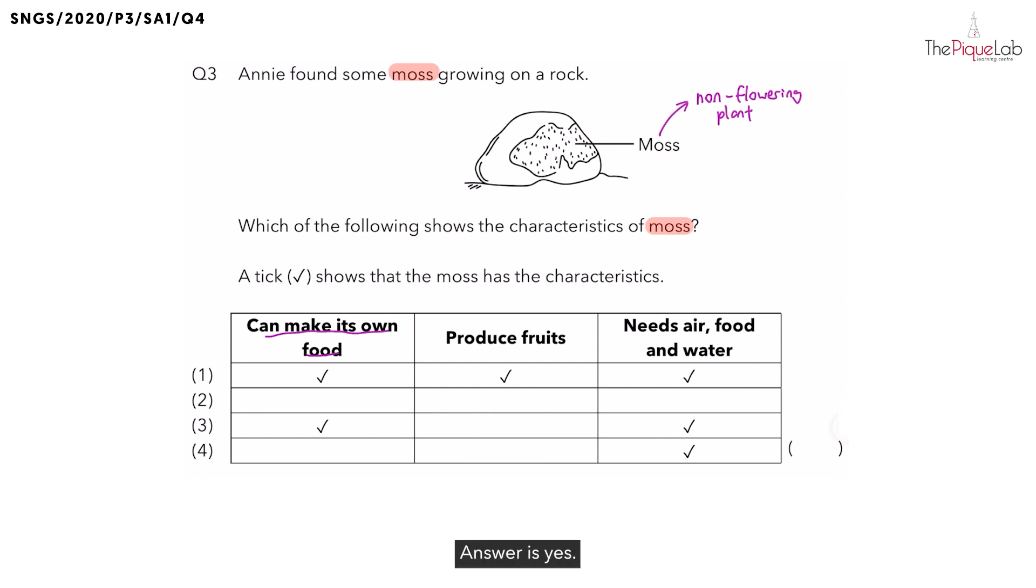The answer is yes. Now, how do we know this? Because, remember, we said earlier the moss is a plant. And plants are the only living things that can make its own food. So, let's check which of the options are possible. It has to be options 1 and 3.